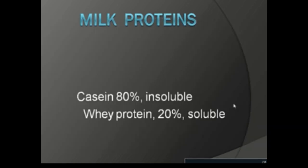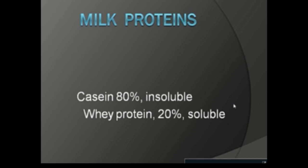Assalamu Alaikum. This video is about milk proteins. Milk proteins can be divided into two groups based on their solubility. There are two types: casein and whey proteins. Casein is an insoluble protein found mostly — about 80% — in the milk of buffalo and sheep, while in humans the percentage is somewhat less compared to other mammals.